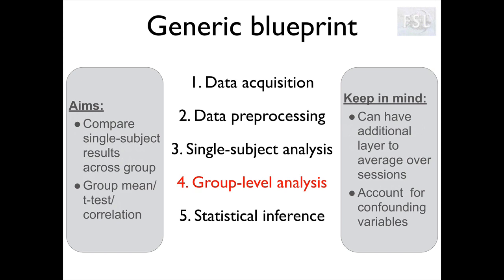Things to keep in mind are the fact that we can have additional layers between single subject and group analysis. For example, we may want to average results from different sessions for each subject before running the group level analysis. At this stage, we can also account for confounding variables like age, disease duration, or other variables we may want to control for.